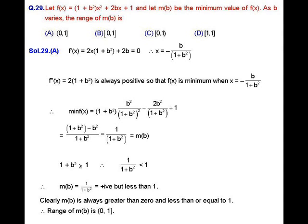Now take the second derivative: f''(x) = 2(1 + b²), and this value is always strictly greater than 0 for any value of b. This implies the point x = -b / (1 + b²) is the point of minima, that is, at this point the function has its minimum value.